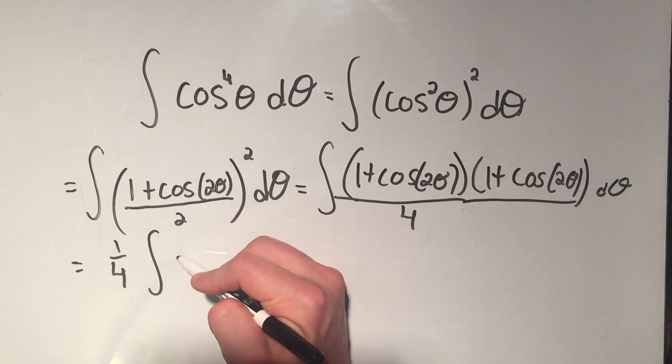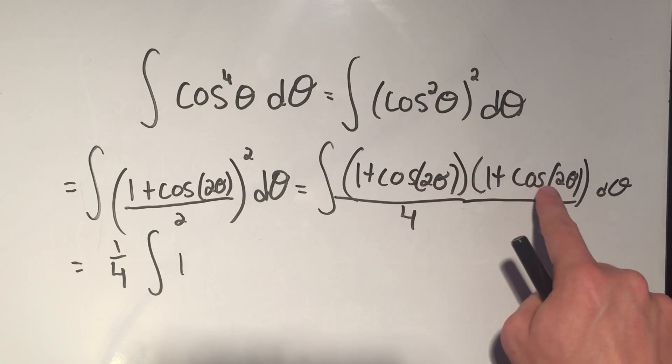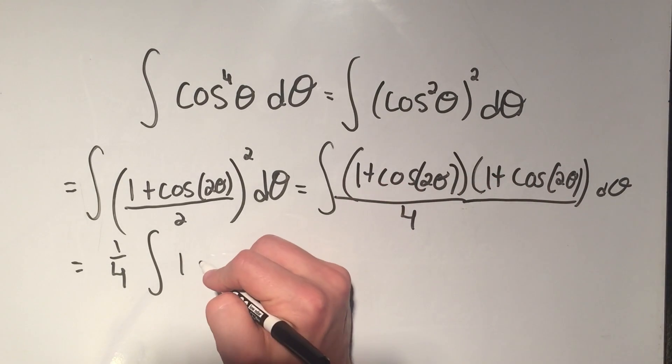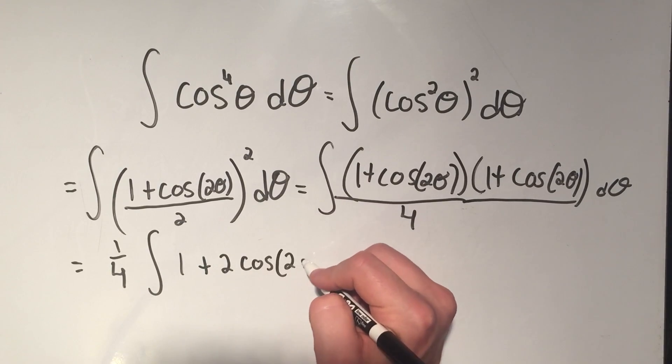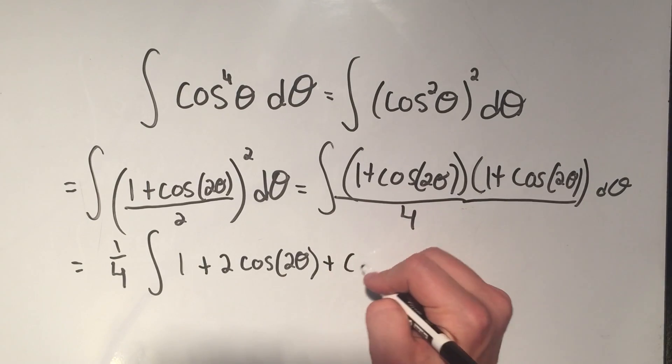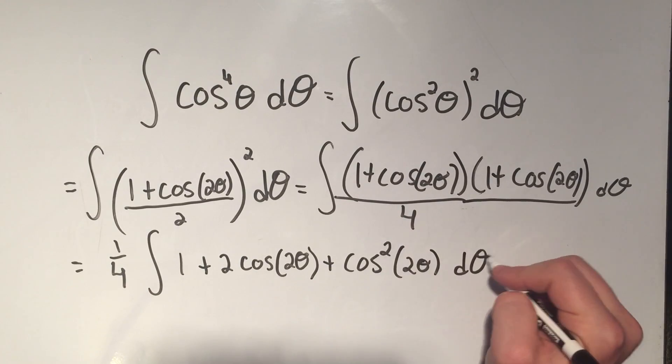First is 1 times 1 is 1. I'd have cosine 2 theta times 1 plus another cosine 2 theta times 1. That's going to be 2 cosine 2 theta. And then I've got cosine 2 theta times cosine 2 theta. That's cosine squared of 2 theta d theta.